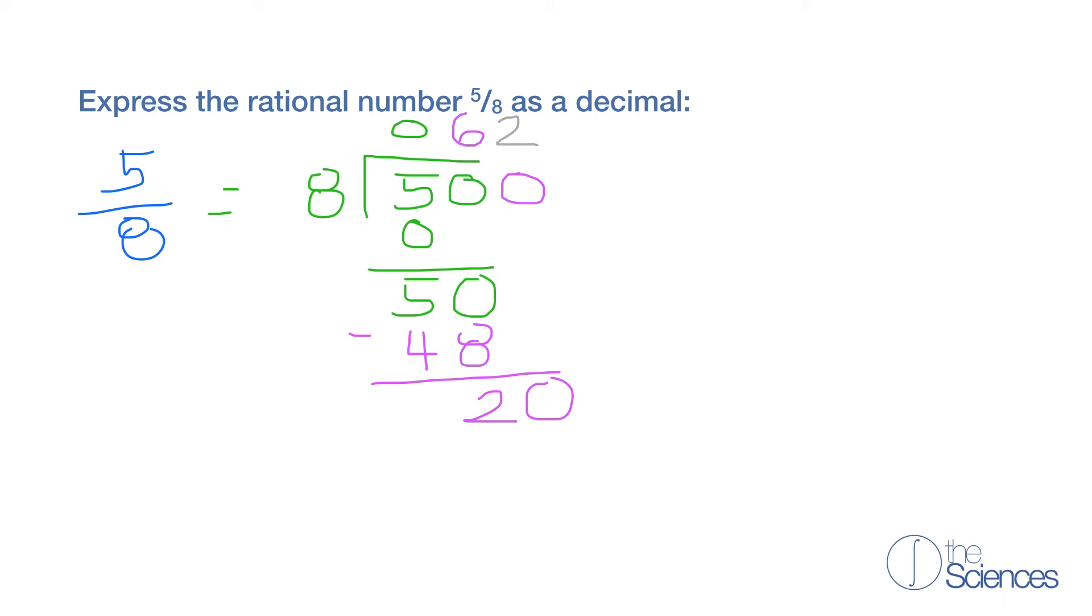Well that's 2 times. 2 times 8 is 16. So now 20 minus 16 is 4.